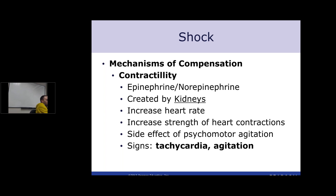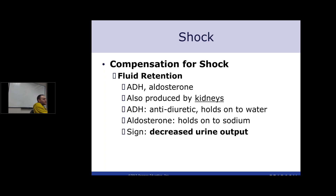Epinephrine and norepinephrine are released by the adrenal medulla. They increase heart rate and heart contractions, leading to tachycardia and agitation — patients become very anxious. Another compensation mechanism is fluid retention: your body releases ADH and aldosterone to reabsorb sodium and water at the kidneys. ADH is the same as vasopressin — we give a synthetic form. Aldosterone holds onto sodium; ADH holds onto water. This decreases urinary output. A patient with good blood pressure and relatively stable heart rate who is getting fluids but has little to no urinary output — that's a sign of shock.